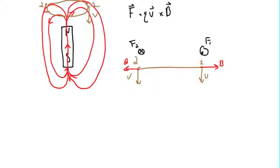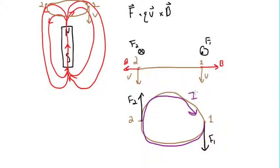Now if we redraw this loop, so if we redraw this loop and we say that this is point 2 and this is point 1, the Lorentz force here will just be in this direction. And the Lorentz force here will just be in this direction. So what ends up happening is that we get a net flow of current that's going to go around the loop like this. So that's going to be I induced.